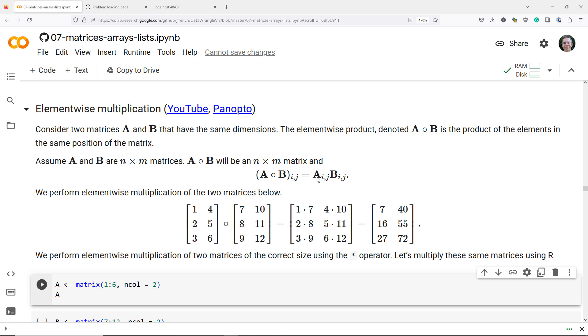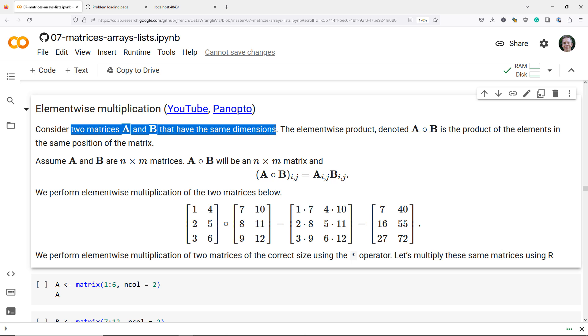Let's talk about how to do element-wise matrix multiplication in general and also in R. So to do element-wise matrix multiplication, your two matrices that you want to multiply have to have the same dimensions.